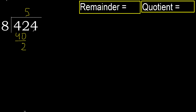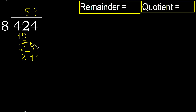Next, bring down 24. 8 multiplied by 3 is 24, which is not greater. Subtract: 24 minus 24 equals 0. Next digit.